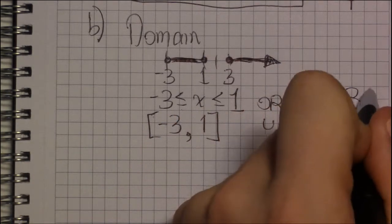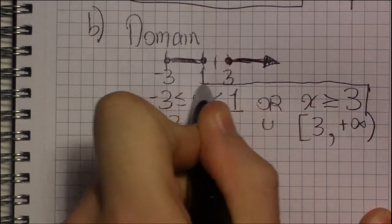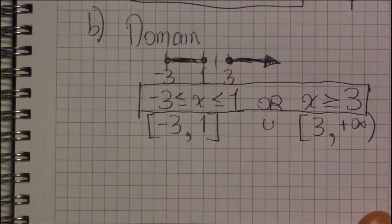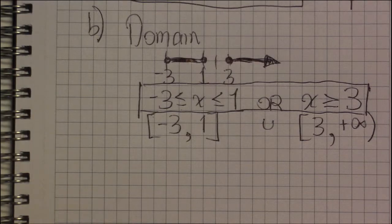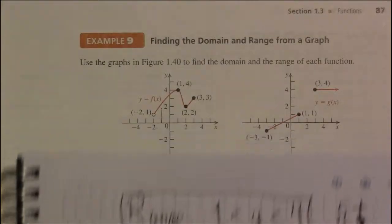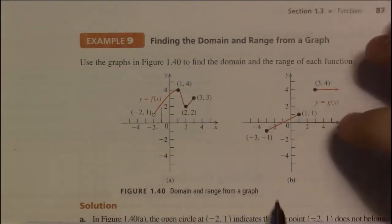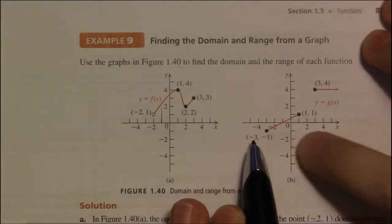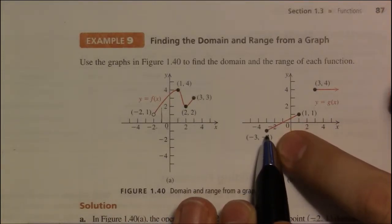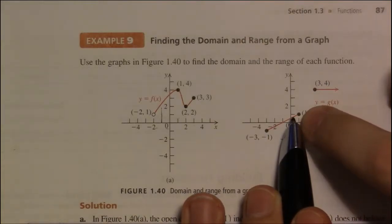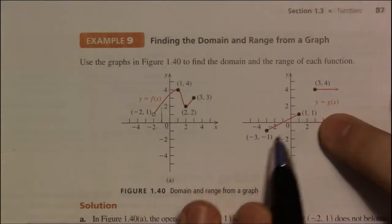So, this is the domain of this particular function that they have graphed for us. To find the range, we're going to be smashing the graph onto the y-axis. Now, let's see, our lowest y value is minus 1 here, and the graph looks to cover everything from minus 1 up to 1, including both endpoints.